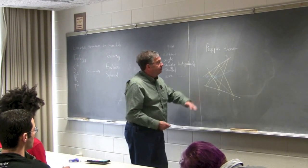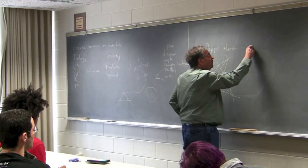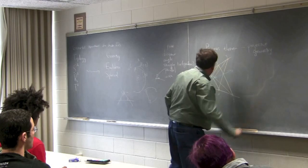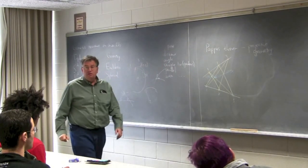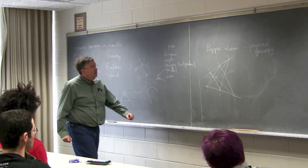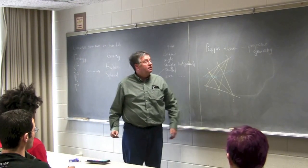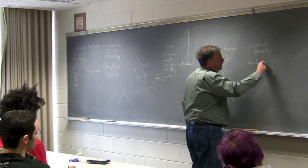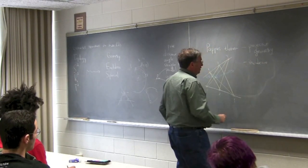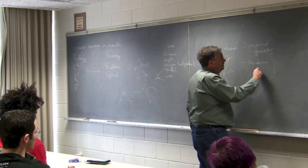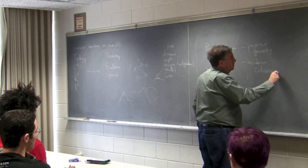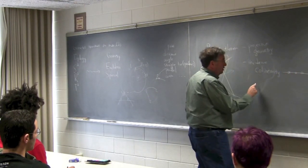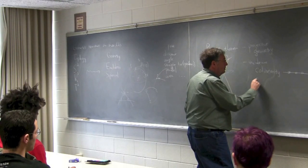So this is an example of a theorem in projective geometry. The statement of the theorem doesn't involve any metric notions at all, just notions of incidence between points and lines. It involves incidence, which we can talk about — three points lying on the same line, that's collinearity — and three lines going through the same point.